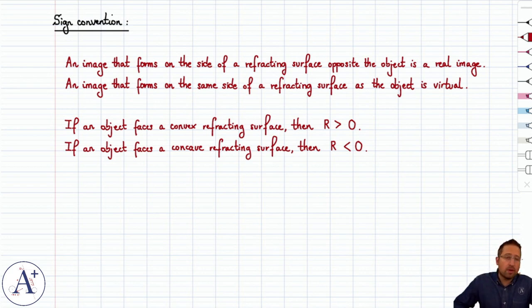Now, if an object faces a convex refracting surface, then the radius of that surface, or the radius of curvature, is counted positive. Whereas if the object faces a concave refracting surface, then the radius is counted negative. And we're going to see in the next video how that has an effect on Lensmaker's formula.